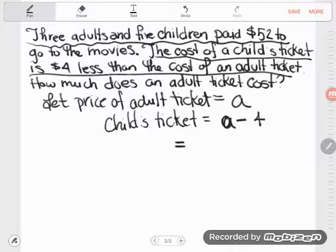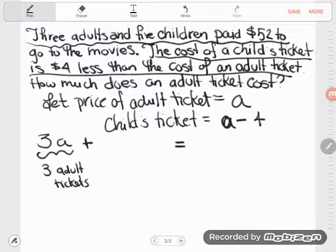So I'm going to buy three adult tickets. Well, I know an adult ticket costs A. If I want to buy three of them, it's going to be three times A. This is the cost of buying three adult tickets. Three A. Now those aren't the only tickets I'm buying.